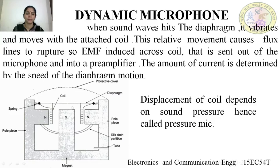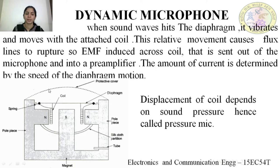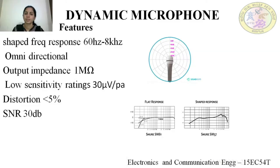The structure of the dynamic microphone includes a diaphragm which is directly connected to a coil of wire, which resides inside the permanent magnet. A protective cover is used to protect all the internal components. When sound waves hit the diaphragm, the diaphragm vibrates and moves with the attached coil. This relative movement causes flux lines to rupture, so EMF is induced across the coil, thereby a current flows through the coil. That current is sent out of the microphone into a pre-amplifier for further amplification. The amount of current is determined by the speed of diaphragm motion and the displacement of the coil depends upon the sound pressure. Hence, the dynamic microphone or moving coil microphone is also called a pressure microphone.